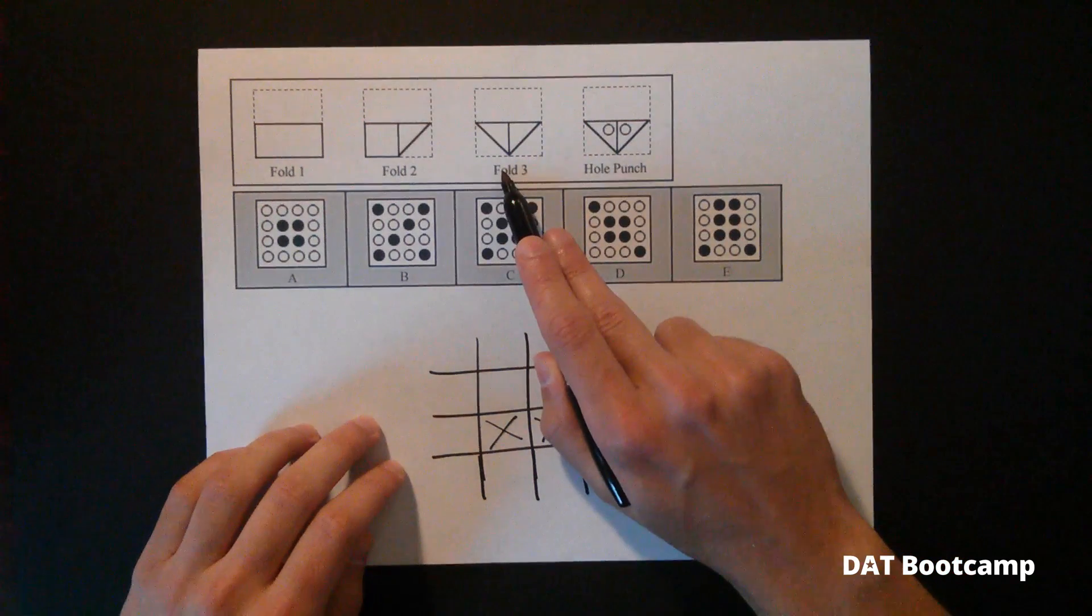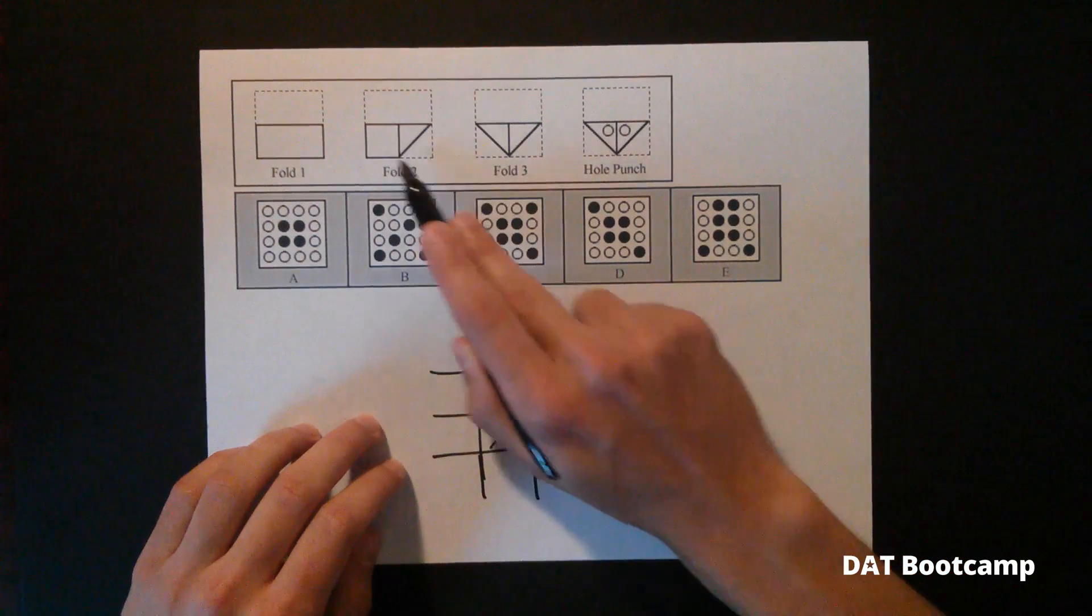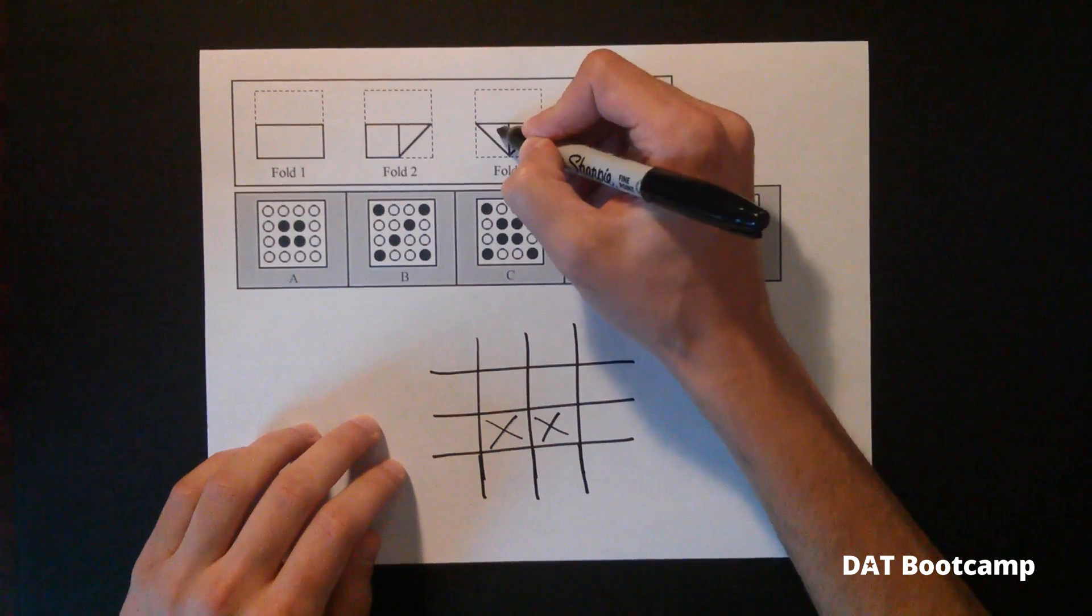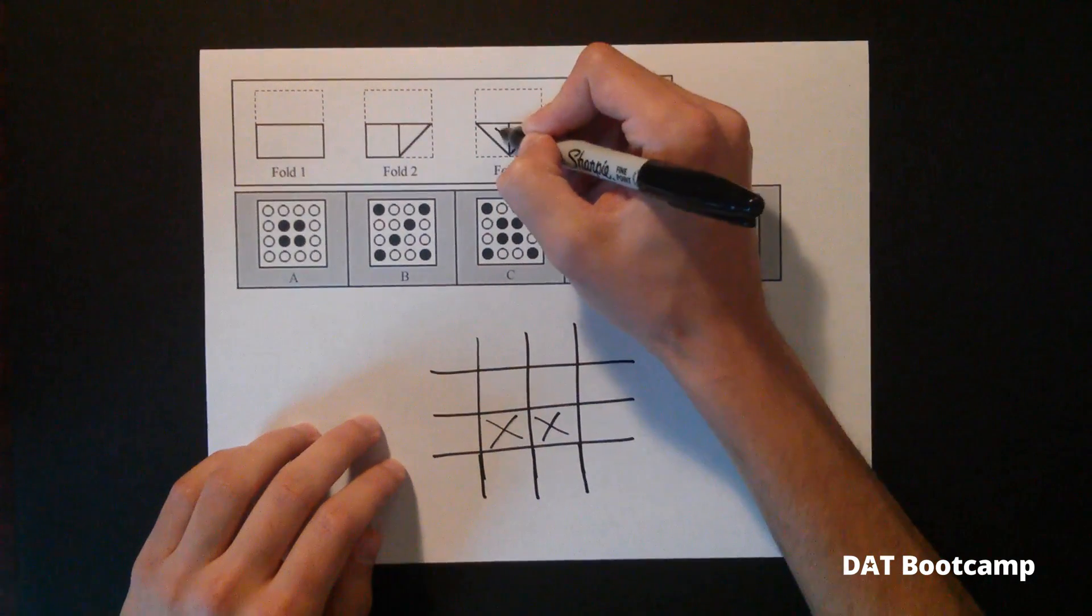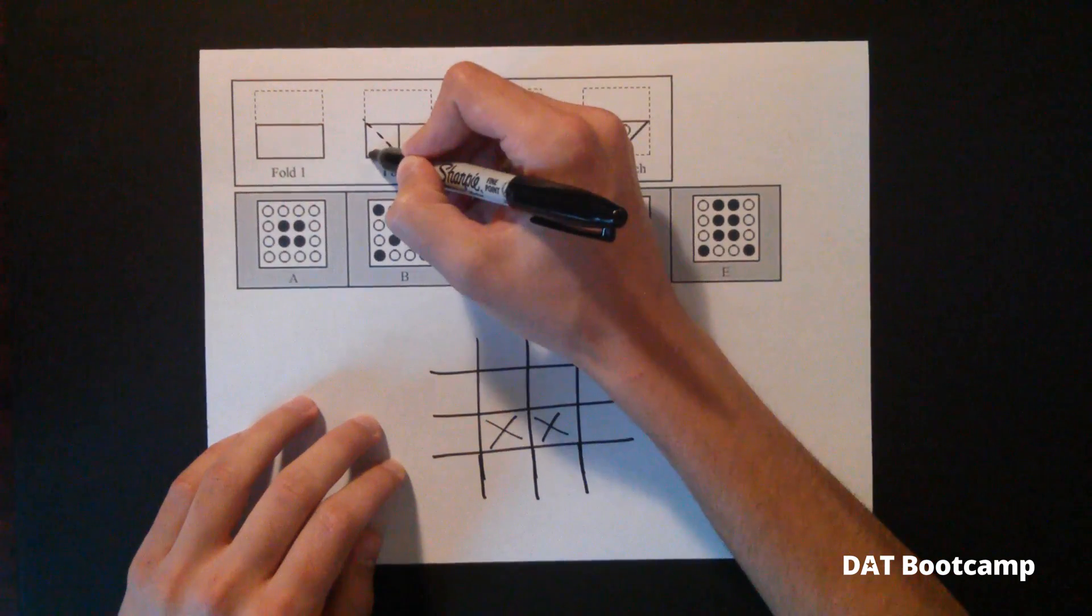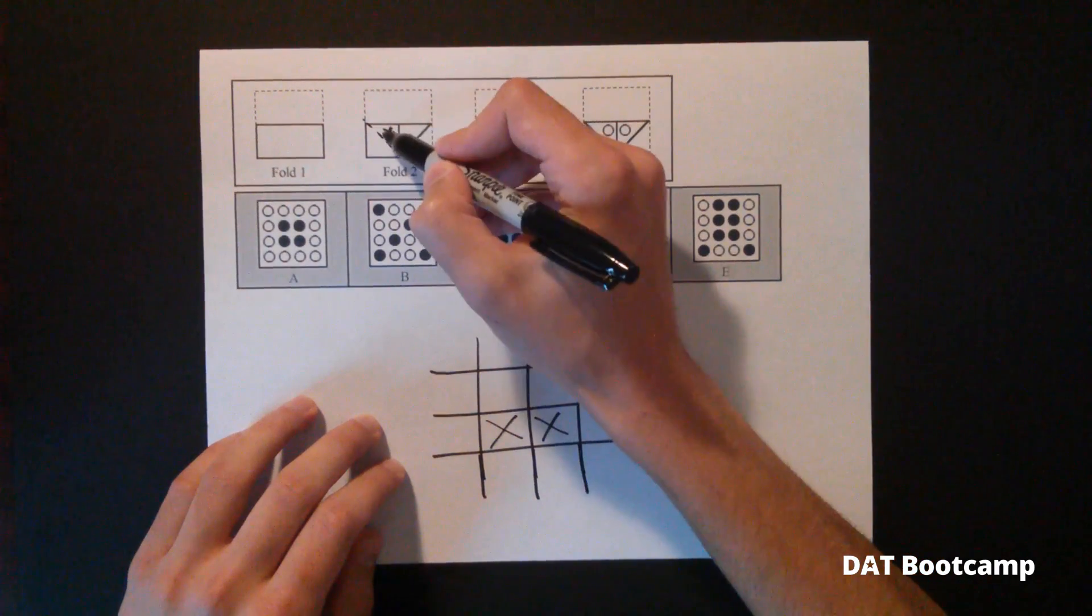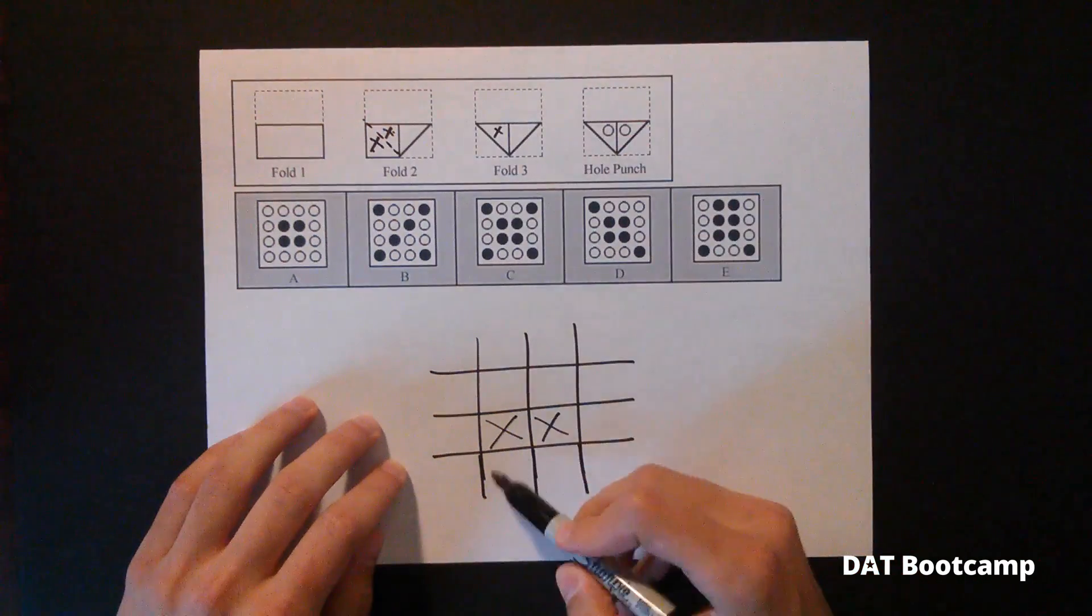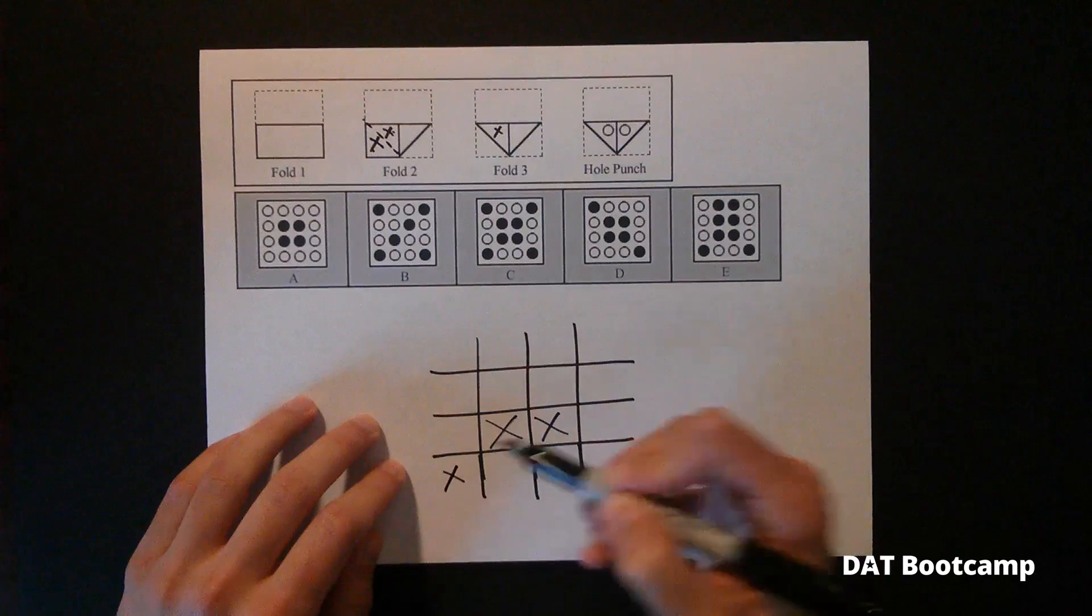So for this one, between fold three and fold two, we see the bottom left corner is folded up, right? There's still a hole right here, right? And this is where the fold occurred. So we can see if you unfold this, you would get a hole right here as well. So we're going to mark this on our paper. There's a hole right here.